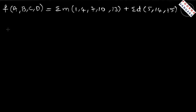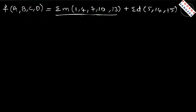Hi everyone, welcome back to my channel. In this video, let us see the K-map minimization example. The given function is f, a four-variable function given as sigma m plus sigma d, meaning it has minterms 1, 4, 7, 10, 13 as true minterms — that means for these minterms the value of f is 1.